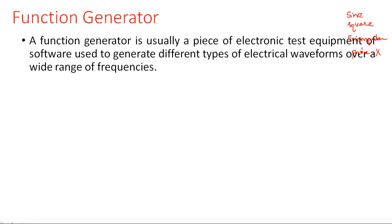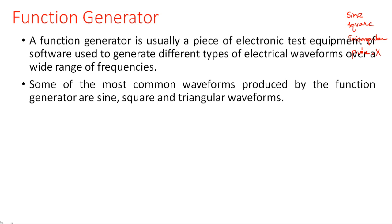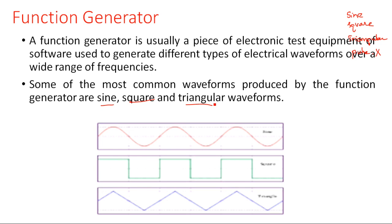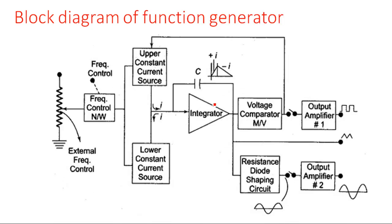A function generator is a piece of electronic test equipment used to generate different types of electrical waveforms over a wide range of frequencies. The most common waveforms produced are sine, square, and triangular waveforms. The function generator block diagram is very important from an examination point of view — once the block diagram is clear in your mind, you can easily write the theory.